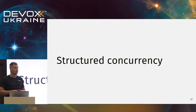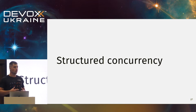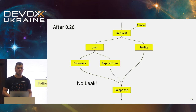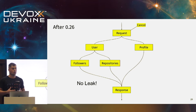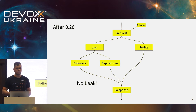They introduced structured concurrency, which defines relations between coroutines. You can have a parent coroutine and children, because you run coroutines against some coroutine scope — that scope could be the global scope or another coroutine like a request. With structured concurrency, if you cancel a parent coroutine it sends the same cancellation signals to child coroutines, so there will be no leak.